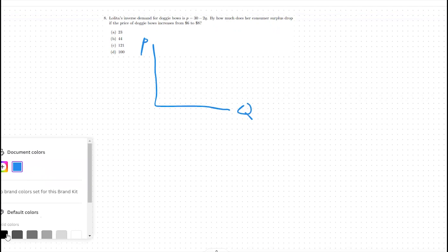I always recommend graphing out our demand functions for consumer surplus type questions. Here, our demand function is going to look like this, a downward sloping line with a start point on the y-axis of 30.